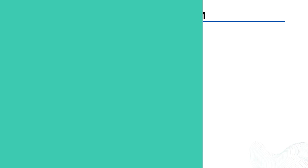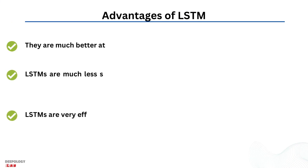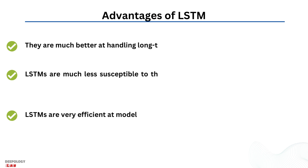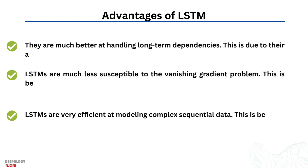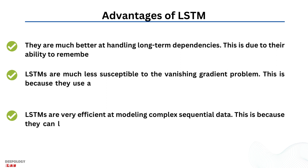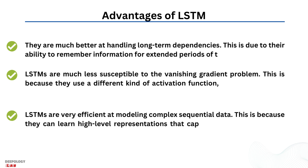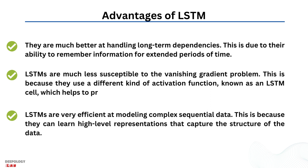There are a number of advantages that LSTMs have over traditional RNNs. First, they are much better at handling long-term dependencies due to their ability to remember information for extended periods of time. Second, LSTMs are much less susceptible to the vanishing gradient problem because they use the LSTM cell architecture, which helps preserve information over long sequences. Finally, LSTMs are very efficient at modeling complex sequential data because they can learn high-level representations that capture the structure of the data.